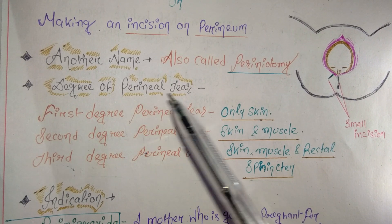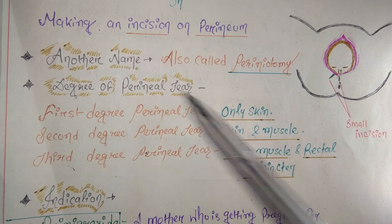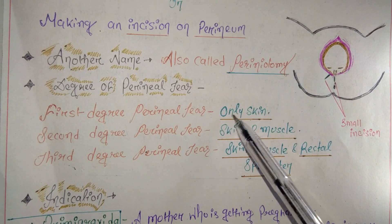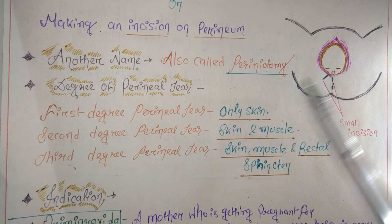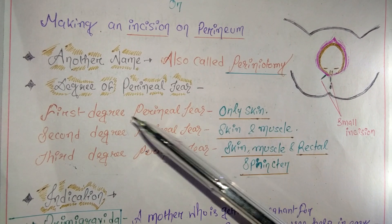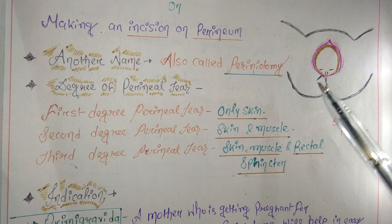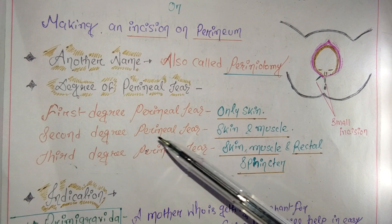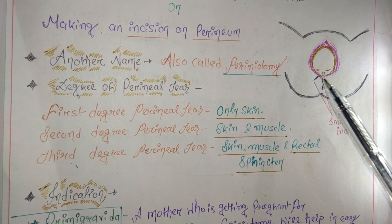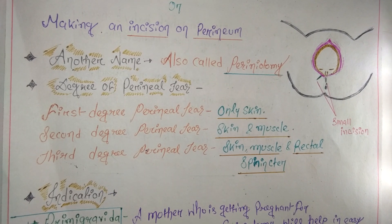Now let's understand the degrees of perineal tear, which helps explain why we perform episiotomy. First-degree perineal tear means only the perineal skin is ruptured. Second-degree perineal tear means both the skin and the perineal muscles are ruptured.